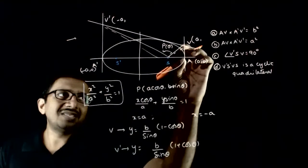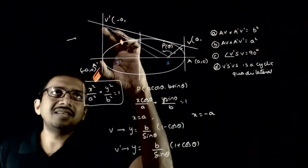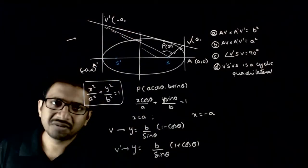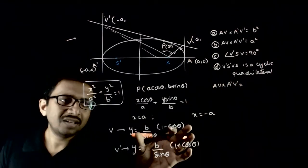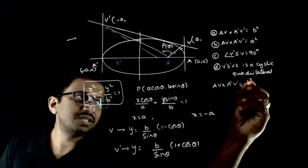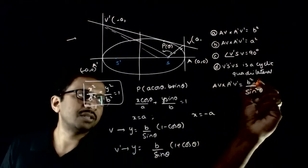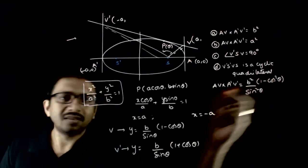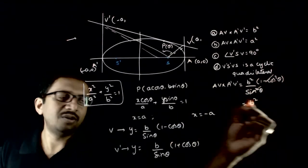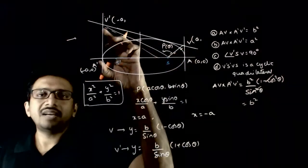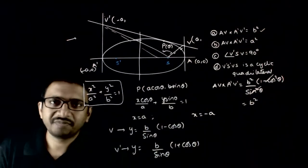Since the x-coordinates of A and V are the same, AV equals the y-coordinate of V, and A dash V dash equals the y-coordinate of V dash. The product AV · A dash V dash = (b² / sin²θ) · (1 + cosθ)(1 − cosθ) = (b² / sin²θ) · sin²θ = b². So option A is correct and option B is wrong.